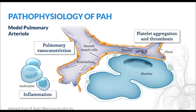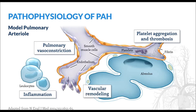Platelet aggregation and thrombosis may occur as a consequence of alterations in physiologic blood flow or due to imbalances in physiologic coagulation pathways. Finally, over the long term, altered concentrations of these mediators result in pathologic changes to the structure of the vasculature, often referred to as remodeling.